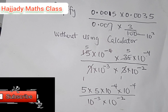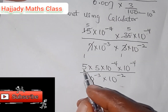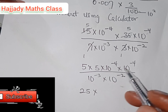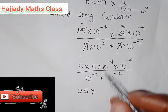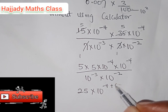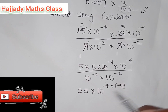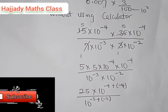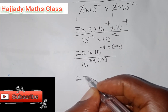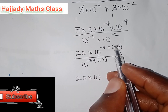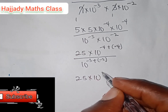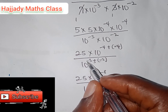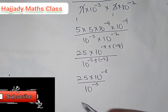Here we are applying the law of indices. 5 times 5 gives 25. Using the addition law of indices, since we are having the same base, the powers will be added together: 10 raised to the power minus 4 plus minus 4, divided by 10 raised to the power minus 3 plus minus 2. Solving this further, we have 25 times 10 raised to the power — plus times minus is minus — minus 4 minus 4 gives minus 8, all over 10 raised to the power minus 3 minus 2 gives minus 5.